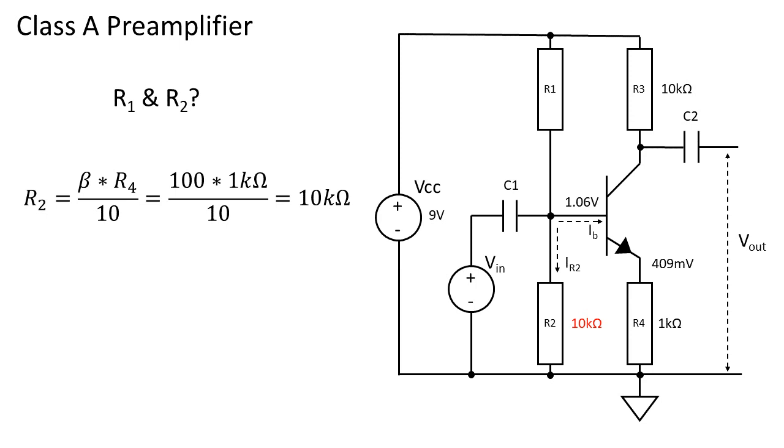R4 was already chosen to be 1k and we assume a beta of 100. This results in a value of 10k ohms for R2.